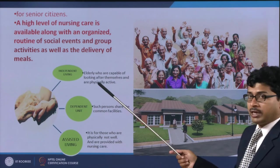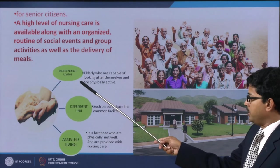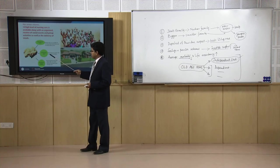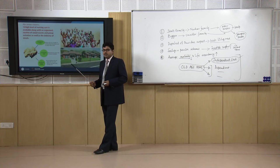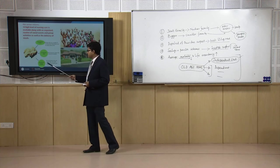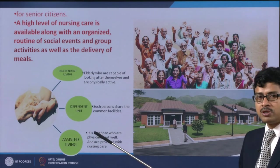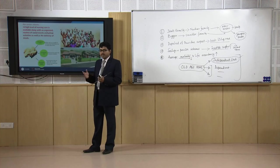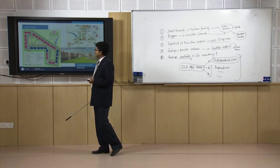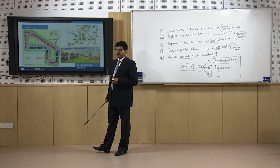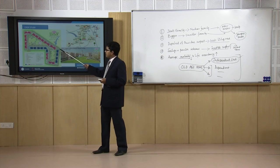There are three different typologies for old age homes. One could be independent — where a person can stay all their life without any help. The second is the dependent unit, where persons share common facilities like cooking or mess facilities. There could also be assisted living, which is a dependent unit where a higher amount of assistance is needed in terms of medical care and physical care. This is one example showing how an old age home can be designed.